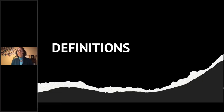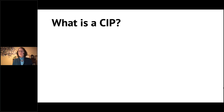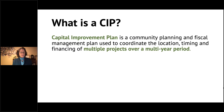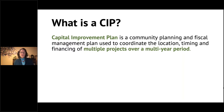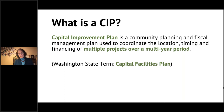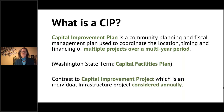Talking about some definitions: what is a CIP, a capital improvement plan? It's a community planning and fiscal management plan used to coordinate the location, timing, and financing of multiple projects over a multi-year period. An alternative name is capital facilities plan, which is the term used in Washington State. Contrast that to a capital improvement project, which is an individual infrastructure project considered annually. Infrastructure includes publicly funded projects such as transportation investments, wastewater, coastal defenses, and hazard mitigation structures.